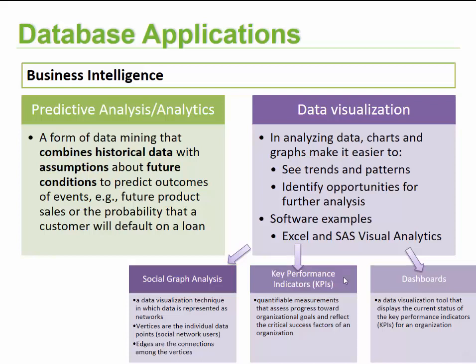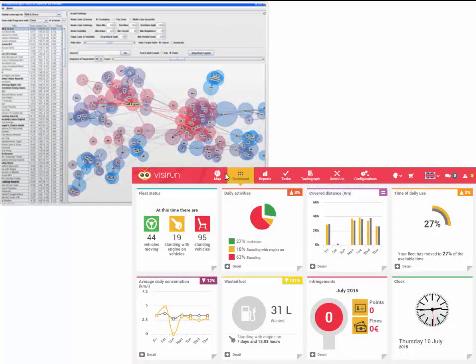Key performance indicators, or KPIs, are quantifiable measurements that assist in tracking progress towards an organization achieving its goals. They reflect the critical success factors a company needs to follow in order to achieve those goals. Dashboards are typically combined with KPIs — a data visualization tool that displays the current status of KPIs within an organization, presenting information in a more visual format.